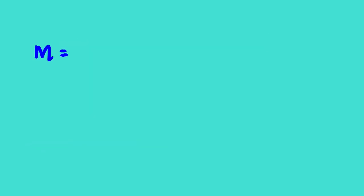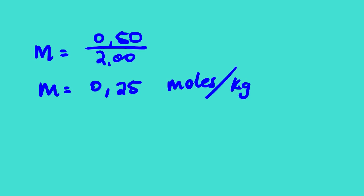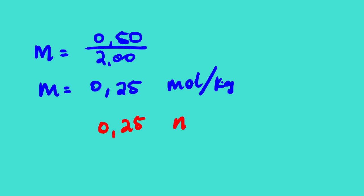Using the molality equation, the number of moles is 0.50 divided by the mass of the solvent, 2.00. We get 0.25 mol/kg. Remember, the SI unit is moles over kilograms, so the molality is 0.25 mol/kg. This shows how we calculate molality when given the mass of a substance.